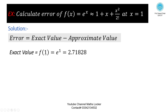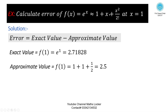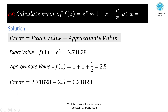Exact value: f(1) = e^1 = 2.7182. Approximate value: taking the right-hand side expression and placing x = 1, we get 2.5. Error = exact value minus approximate value = 2.7182 − 2.5 = 0.21828.